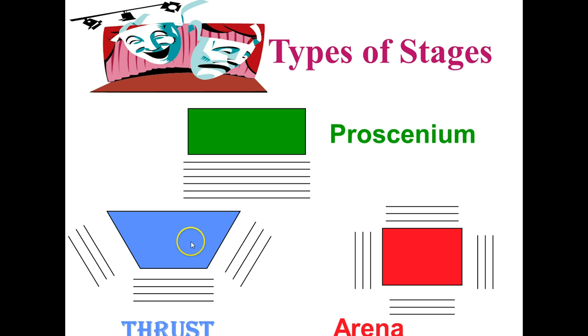And the shaded areas — the blue in the thrust, the green in the proscenium, and the red in the arena — refer to the places where the action of the play actually takes place.